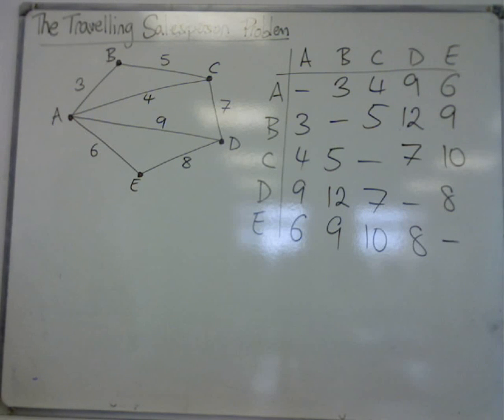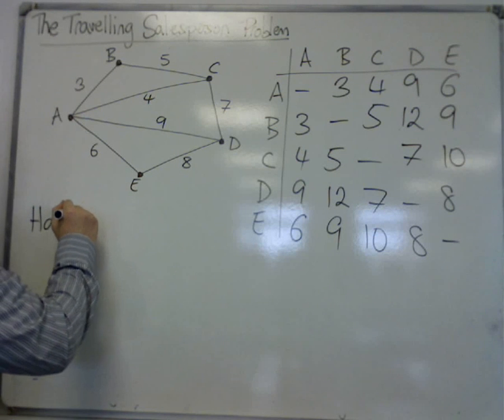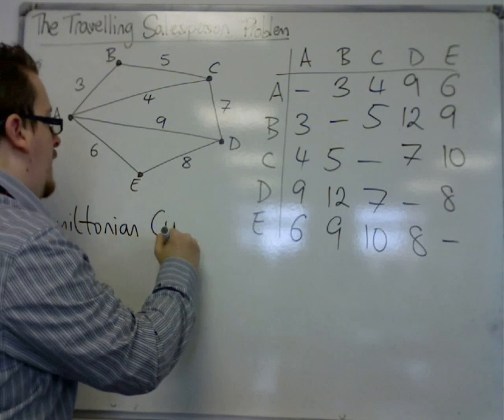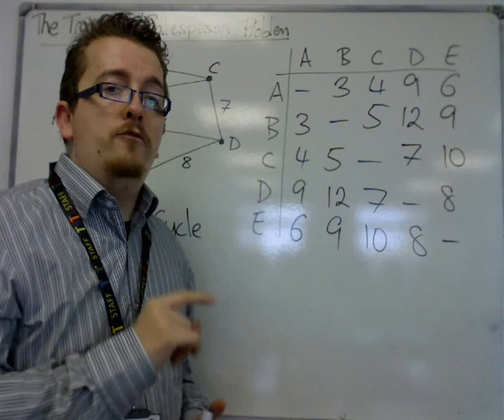So if we're just going to find an example, remember a Hamiltonian cycle is looking for a tour that visits every vertex and gets back to where it started. It doesn't have to travel along every edge.